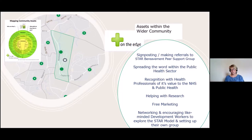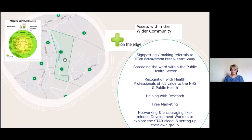From that training we've got five Star bereavement peer support groups set up across Bristol. We've got 17 people at the moment in Bristol, North Somerset and South Gloucestershire who have just finished doing the training as well. We're running it again in July and again in October. Eventually we would love to see more groups in North Somerset, South Gloucestershire and beyond — following this model to create a sustainable peer support project.